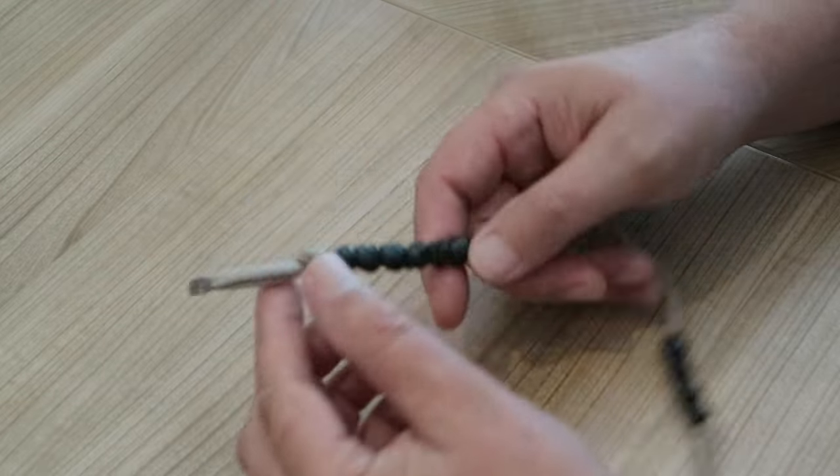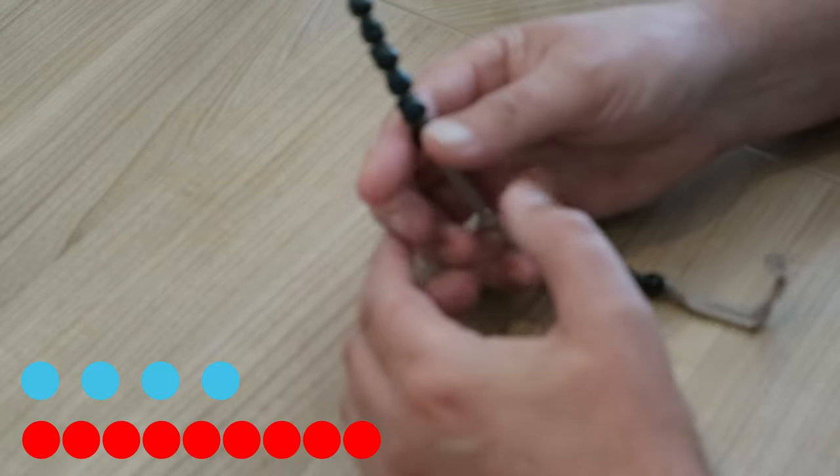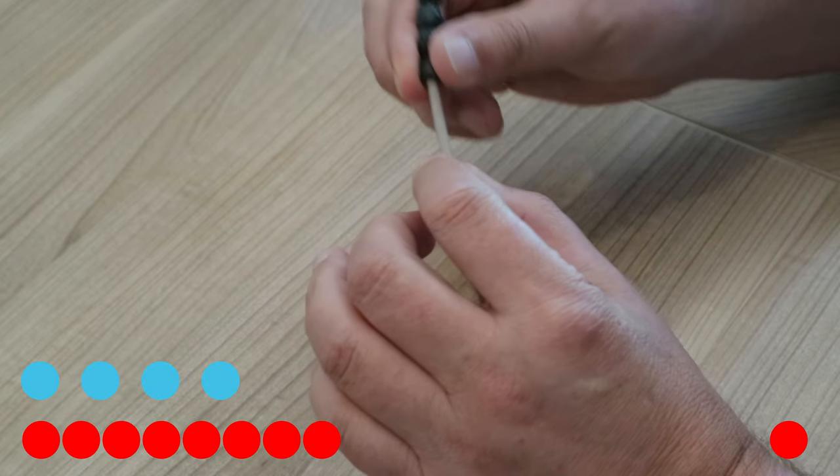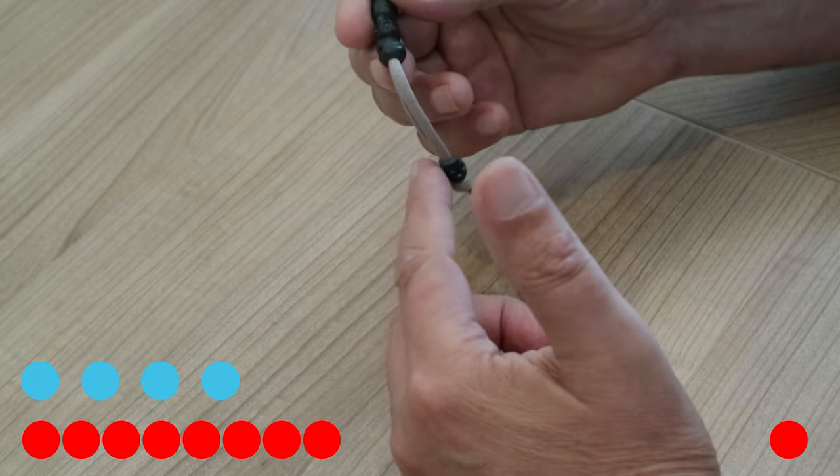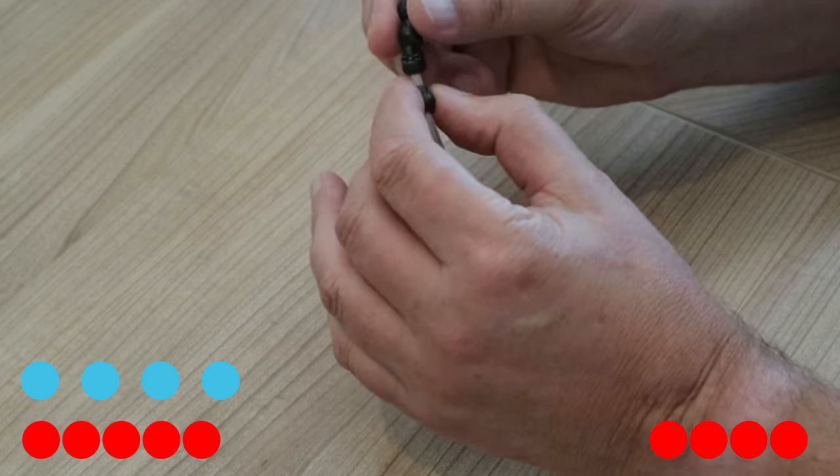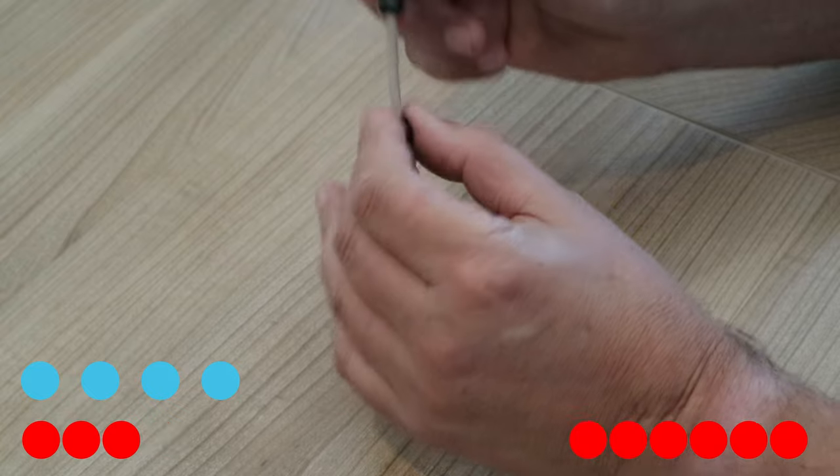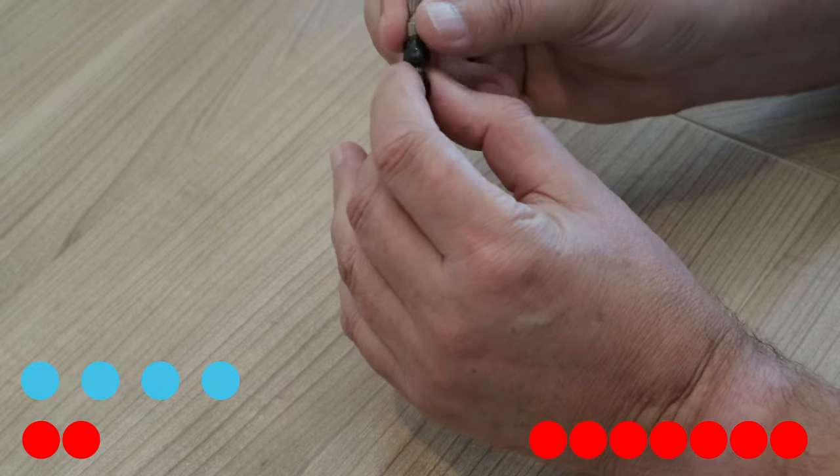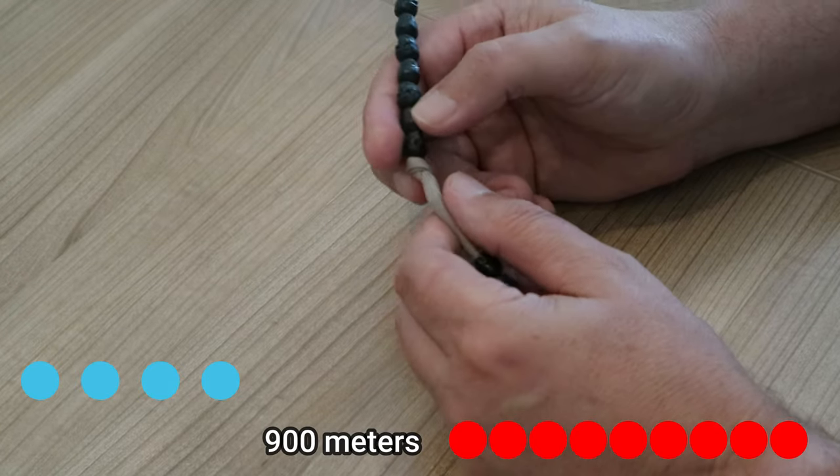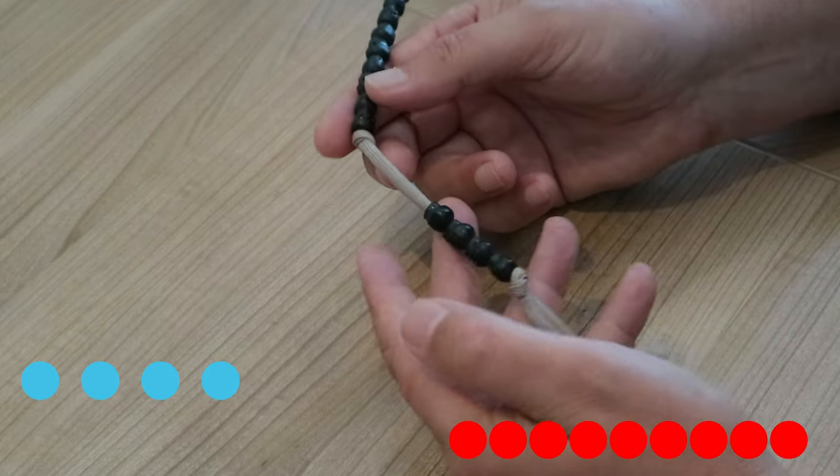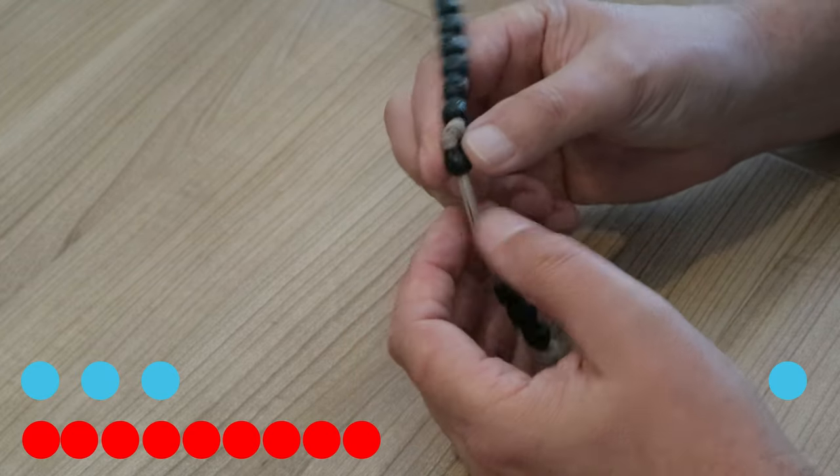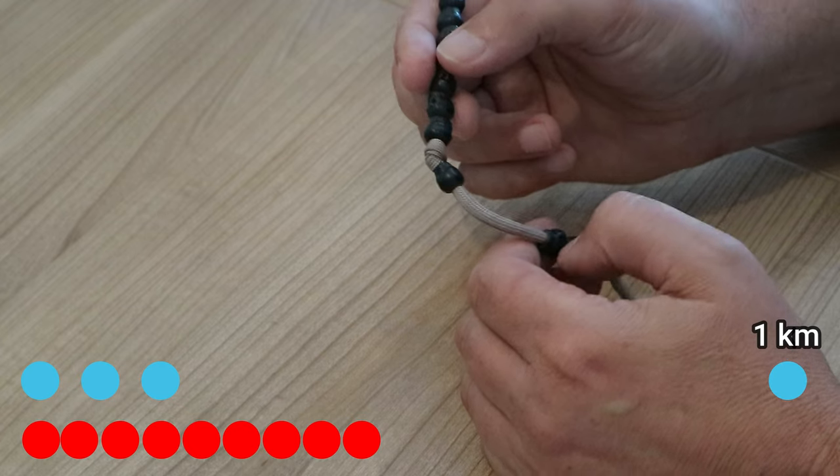Now when I'm walking what I'll do is I'll walk 100 meters and as soon as I cover that I slide down one of these beads. Okay so it's 100 meters covered. 200 meters, 3, 4, 5, 6, 7, 8, 9, right? 900 meters and the first one after that would be one kilometer.